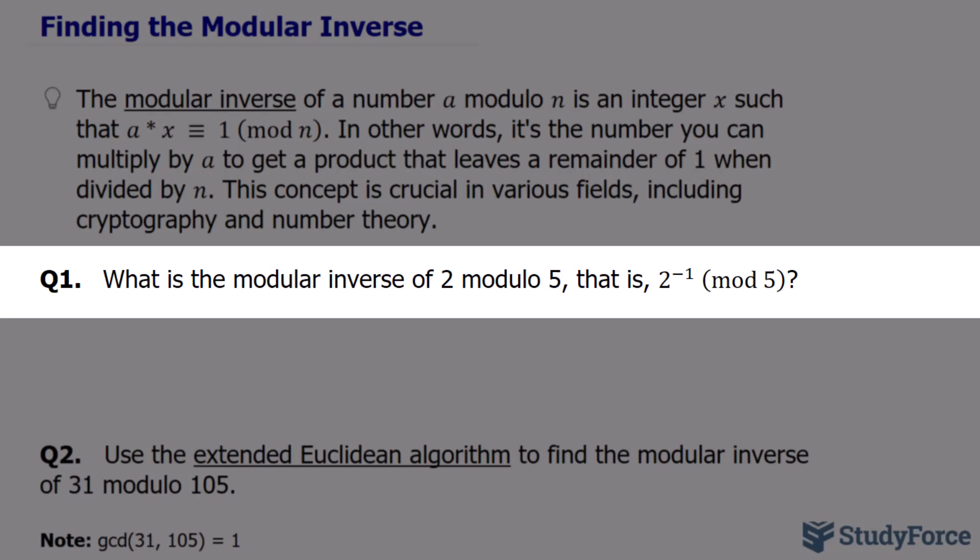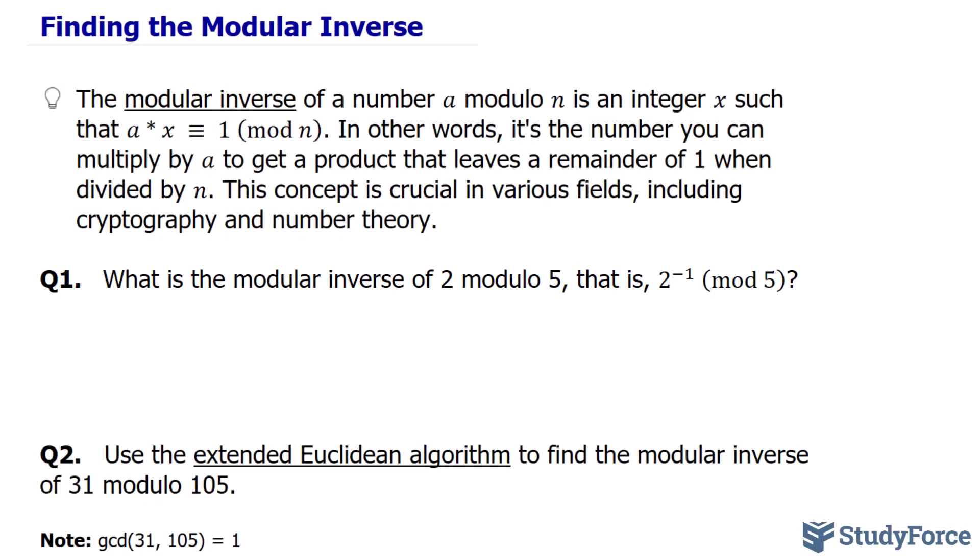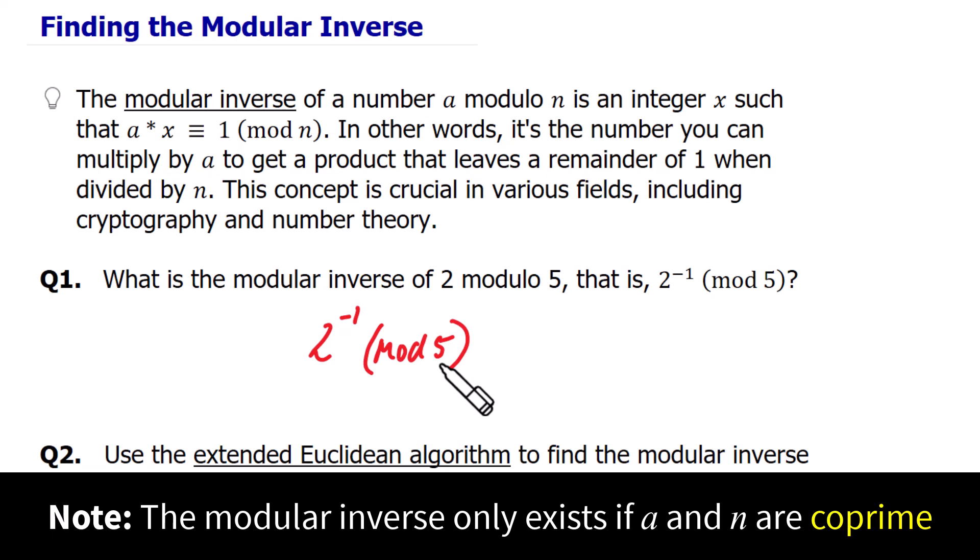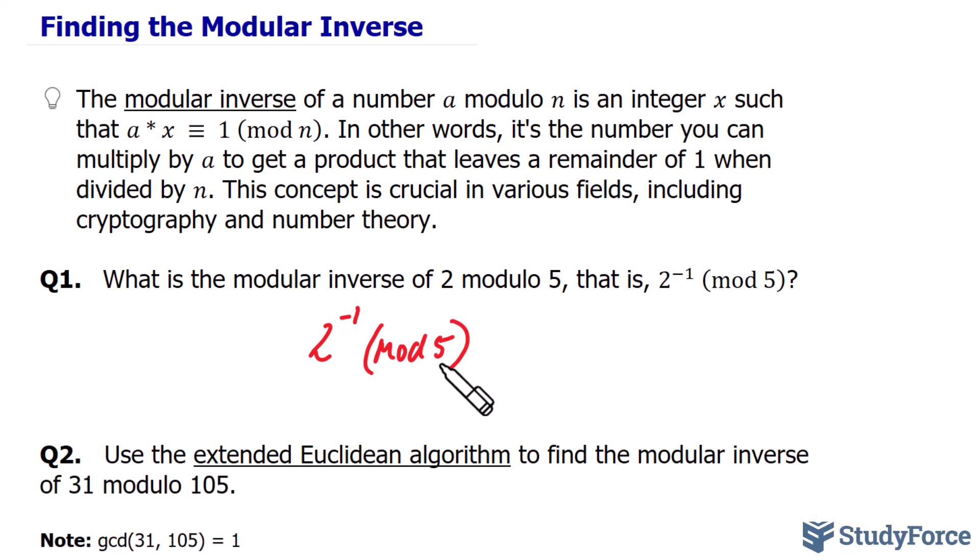What is the modular inverse of 2 modulo 5? In literature, this is written as 2 with a superscript of negative 1 to represent the inverse mod 5. In order for us to find the modular inverse, we have to make sure that the number 2 and 5 are co-prime. Co-prime means that the largest common divisor that they both share is 1. Normally to find the greatest common divisor, you would need to apply some algorithm, such as the Euclidean algorithm for finding the GCD. But because 2 and 5 are smaller numbers, we can find the GCD more easily by inspection.